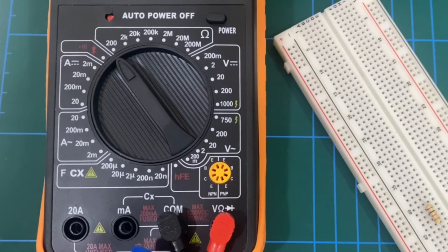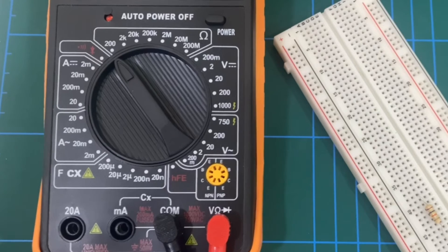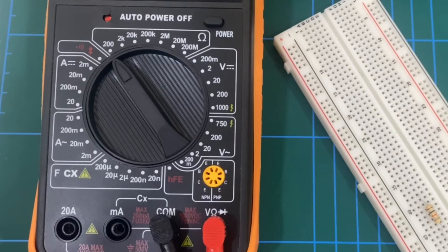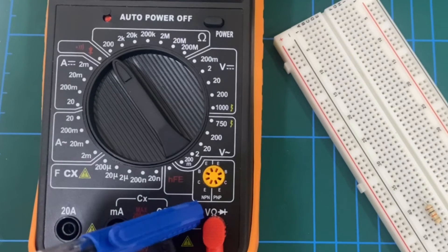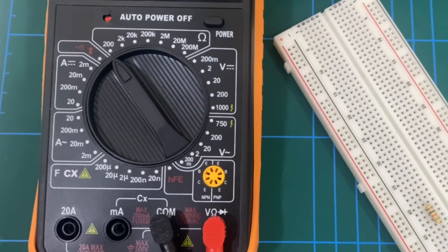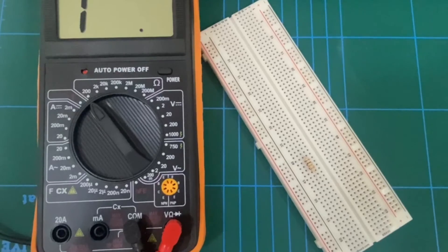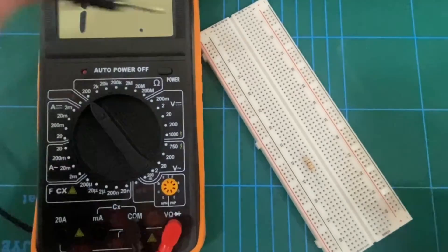Kindly note that the black wire should always be connected to the COM port, the common port, and the red wire should be connected based on the thing that we're trying to measure. And in our case, we're trying to measure the resistance, so we will be connecting our red wire to this terminal of the multimeter or this port of the multimeter. So let's turn on the multimeter and see what happens when we try to measure the resistance across the resistor.